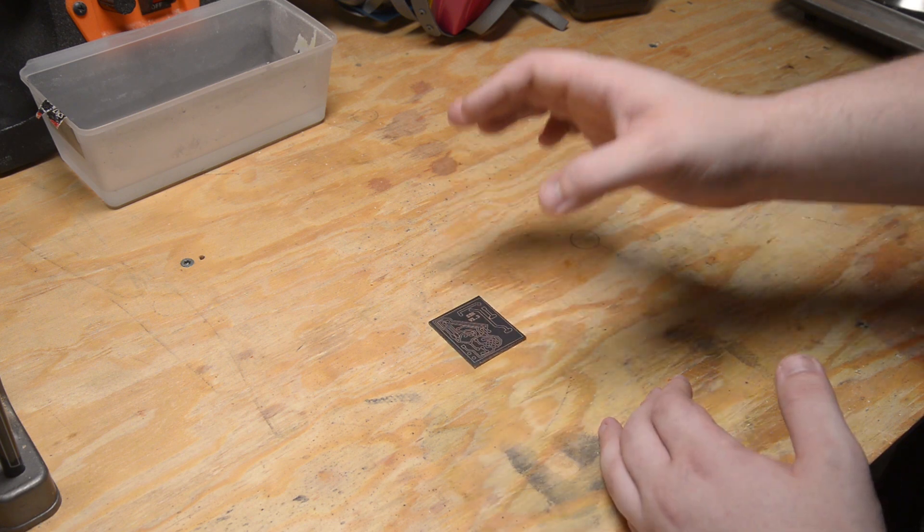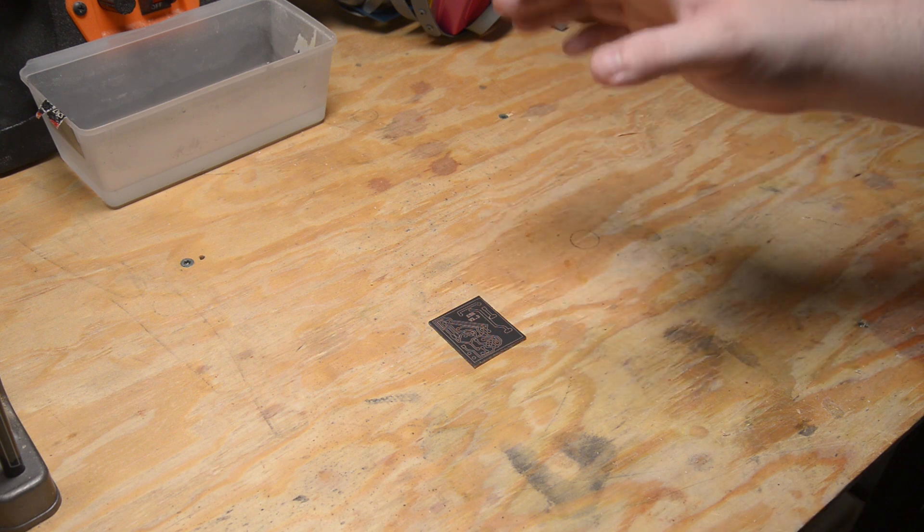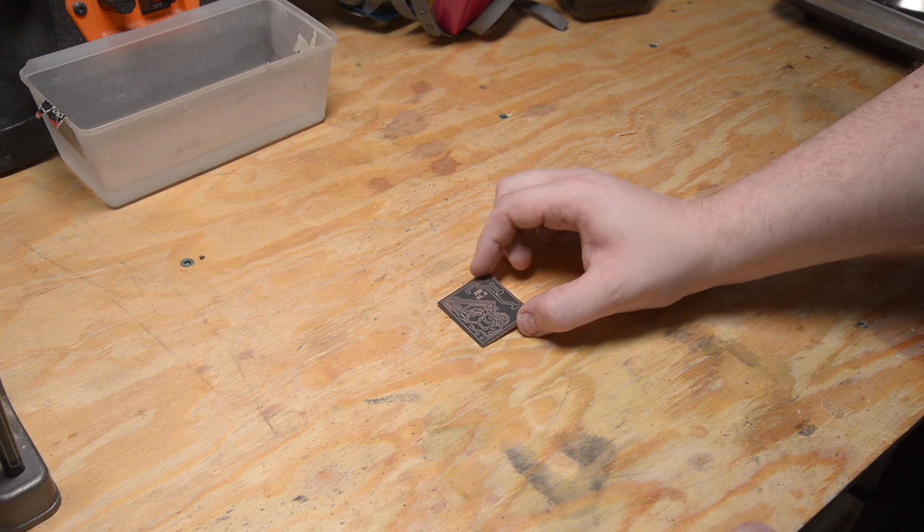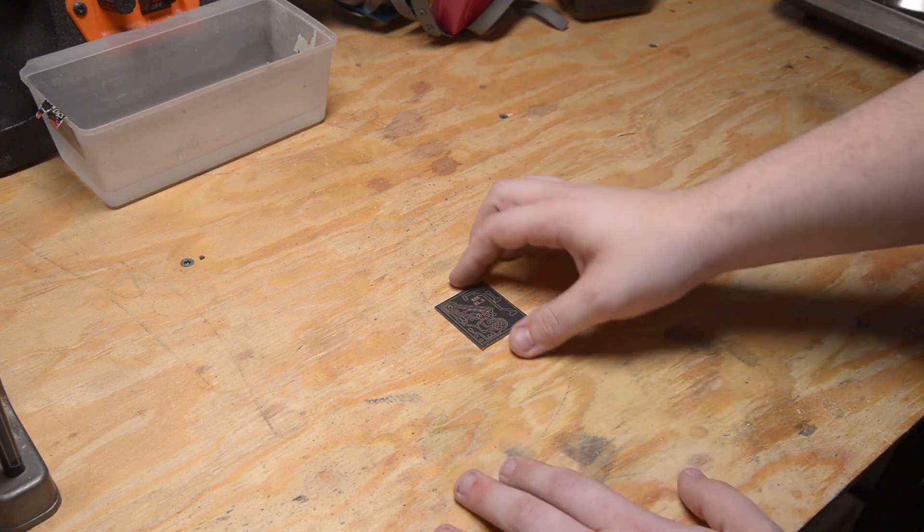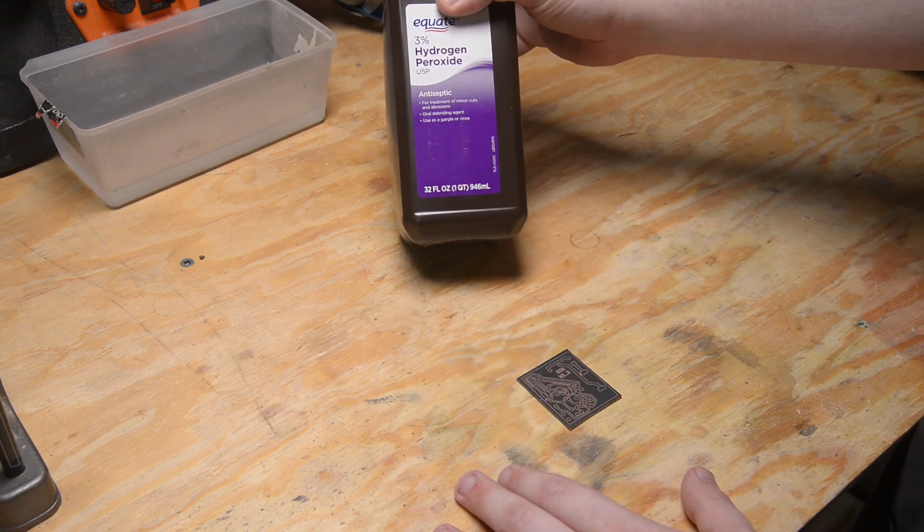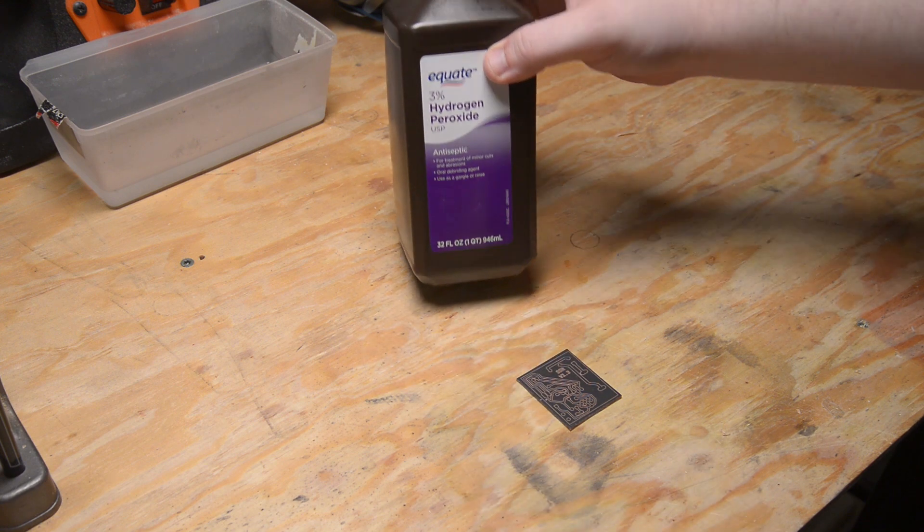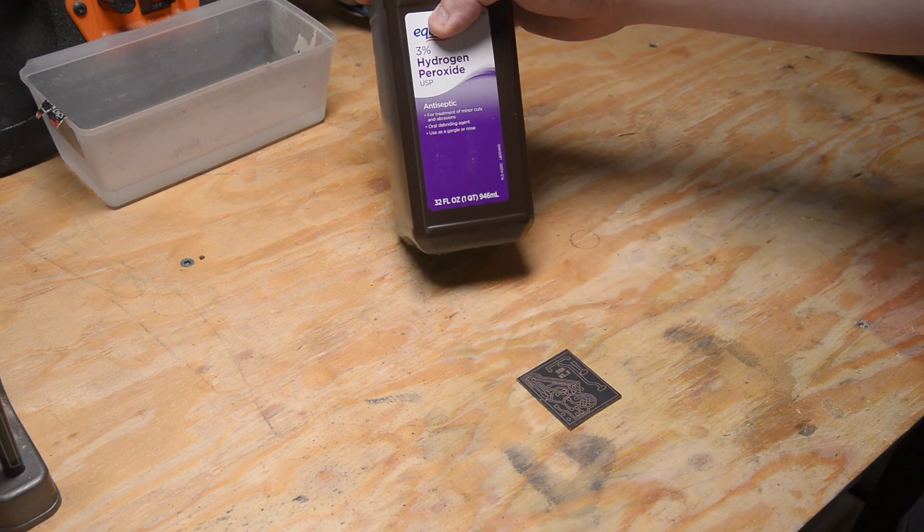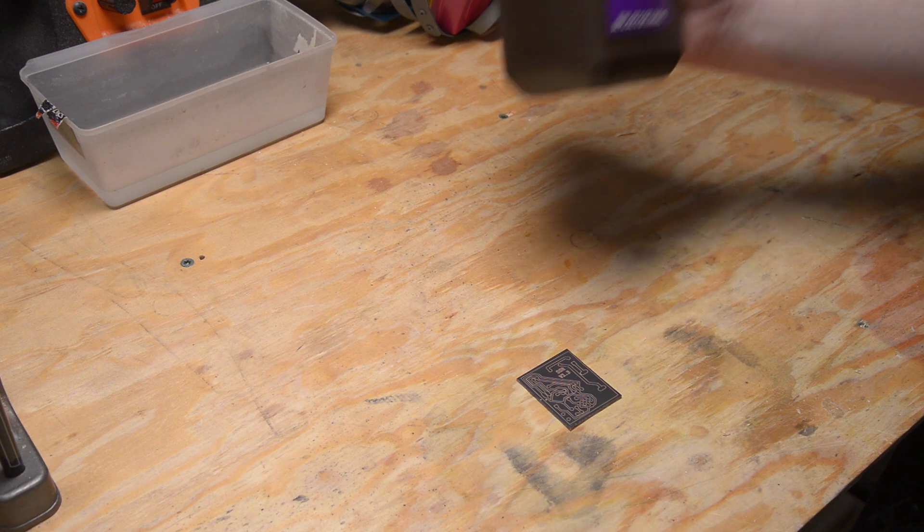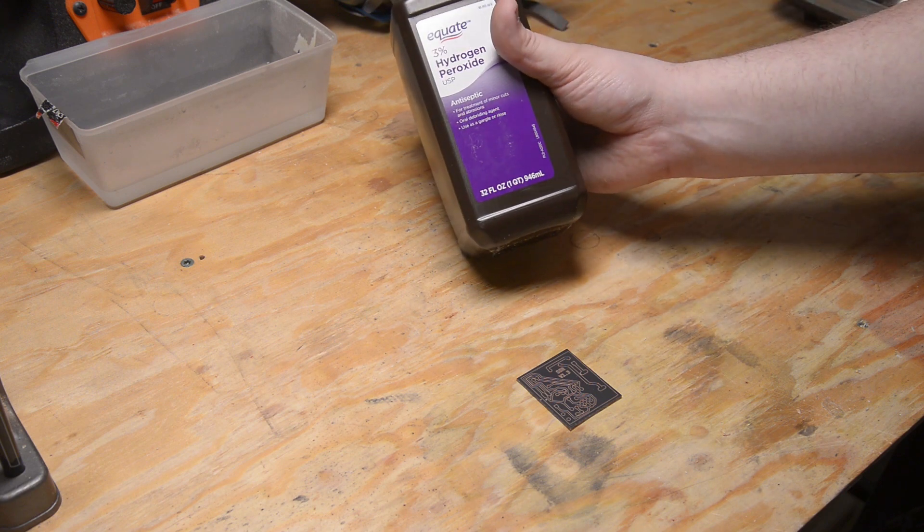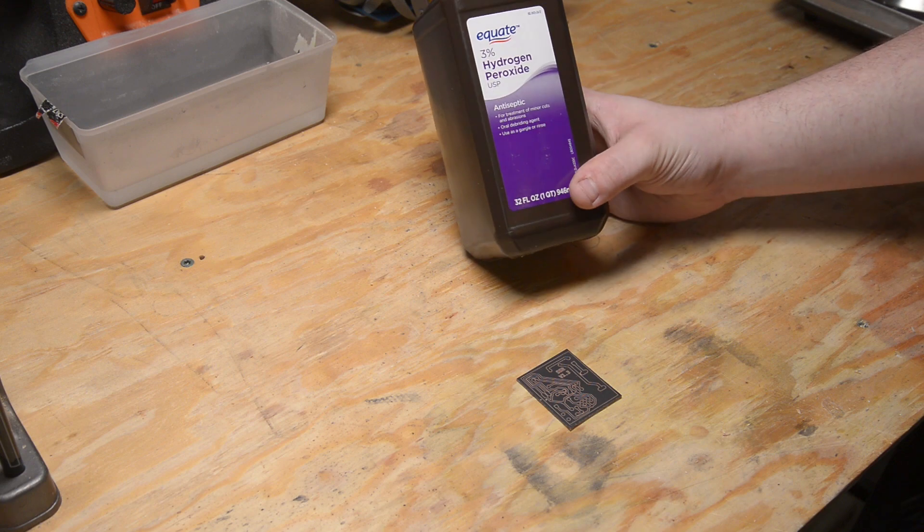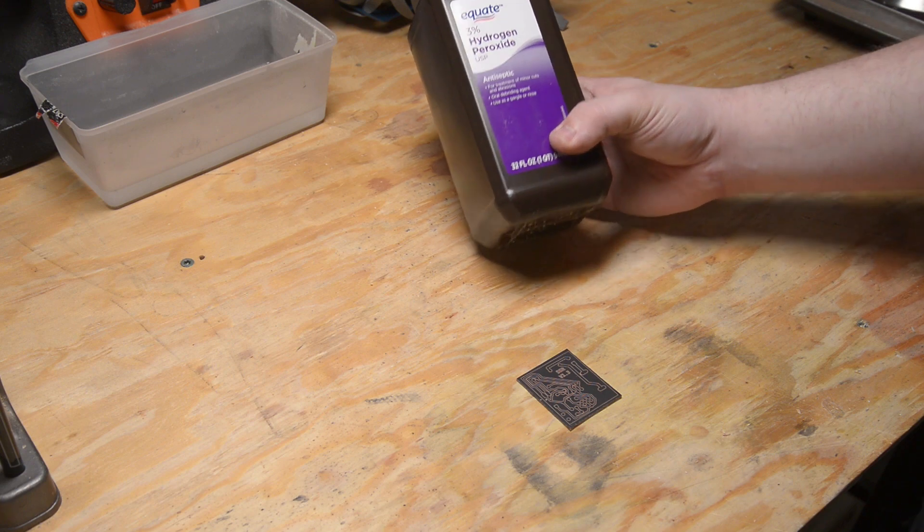I wanted to show you guys a way cheaper, at least in some areas way cheaper, way to etch your circuit boards. Basically what we're going to be using today is hydrogen peroxide - you can get this at really any drugstore. This bottle is like 88 cents and will last like six months depending on how many boards you make.